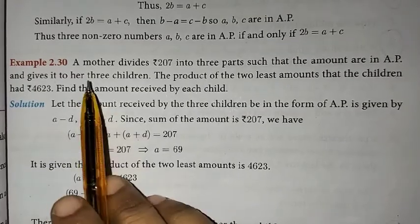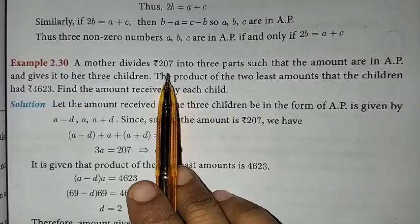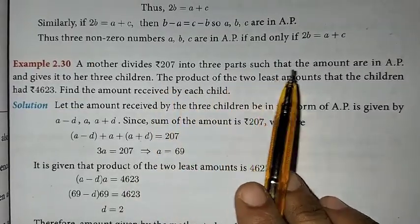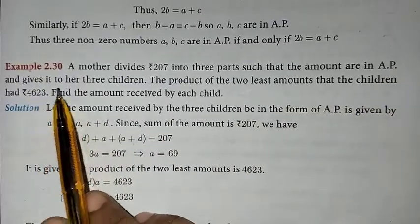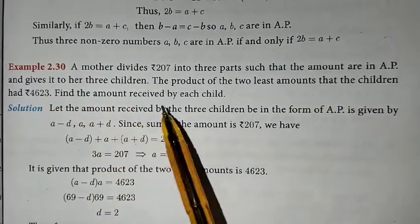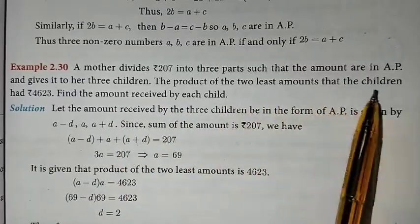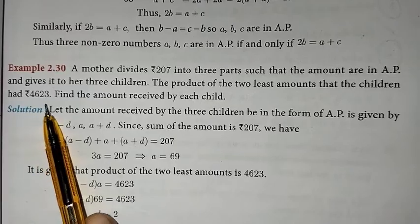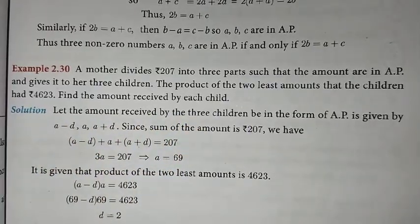In the problem, a mother divides rupees 207 into 3 parts such that the amounts are in AP and gives it to her 3 children. The product of the 2 least amounts that the children had is rupees 4,623. Find the amount received by each child.